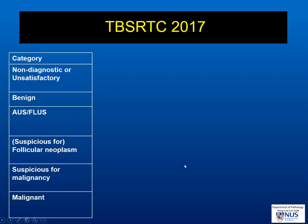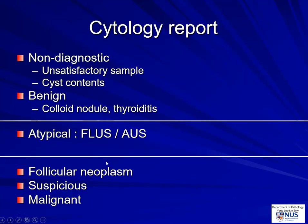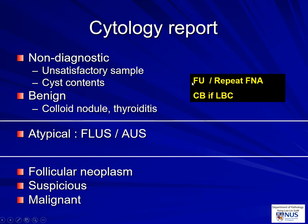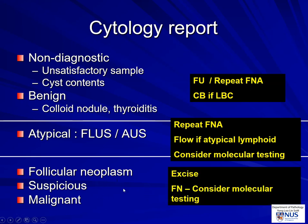In summary, we've looked at the Bethesda system categories. Remember that generally the threshold for excision is follicular neoplasm and above. For cytology reports: generally it's follow-up or repeat FNA for non-diagnostic cases — you can also do a cell block if liquid-based cytology is being done. For the atypical category, repeat FNA, send for flow cytometry if lymphoid atypia, and consider molecular testing. For follicular neoplasms, excise; also for suspicious and malignant nodules; and consider molecular testing for follicular neoplasm.